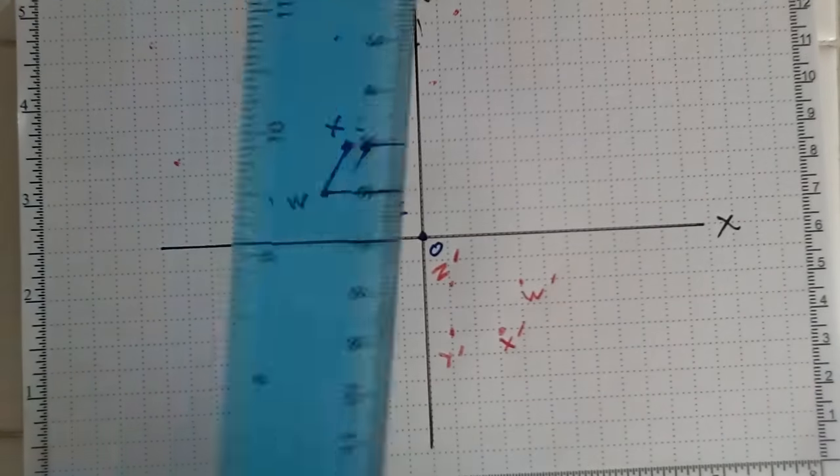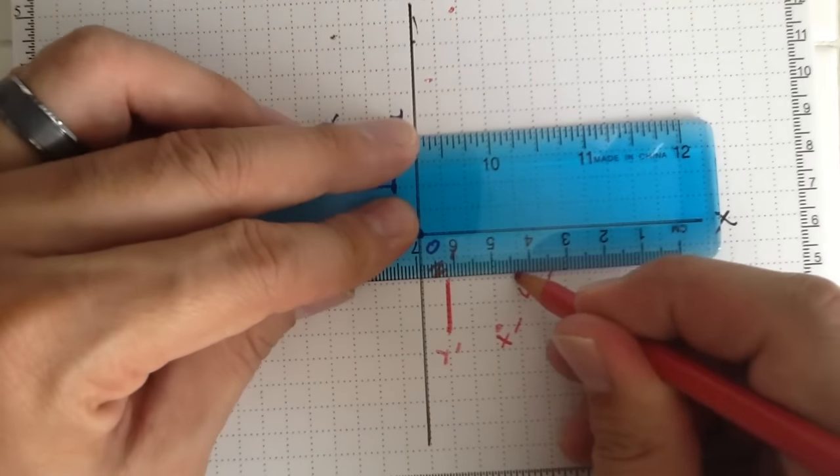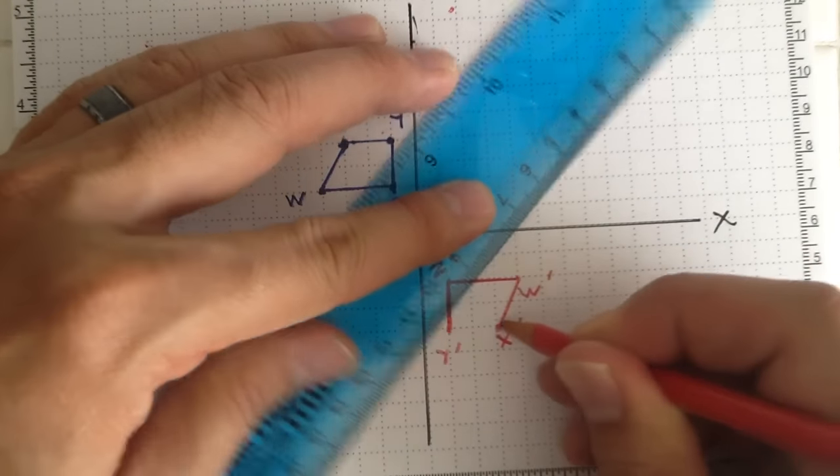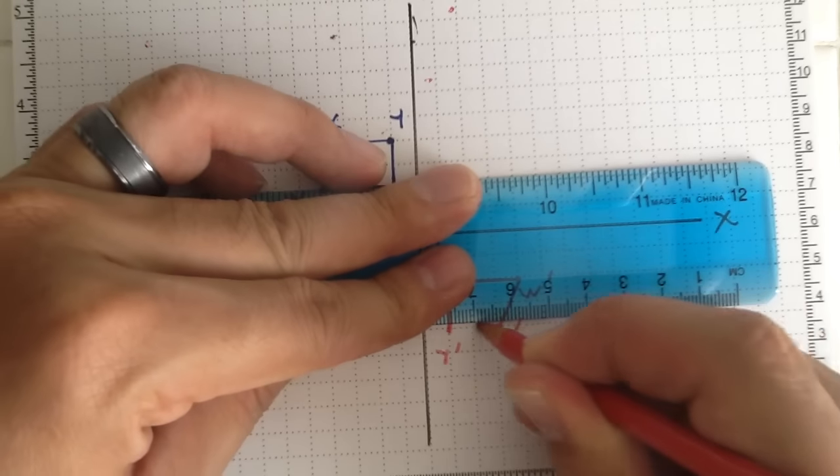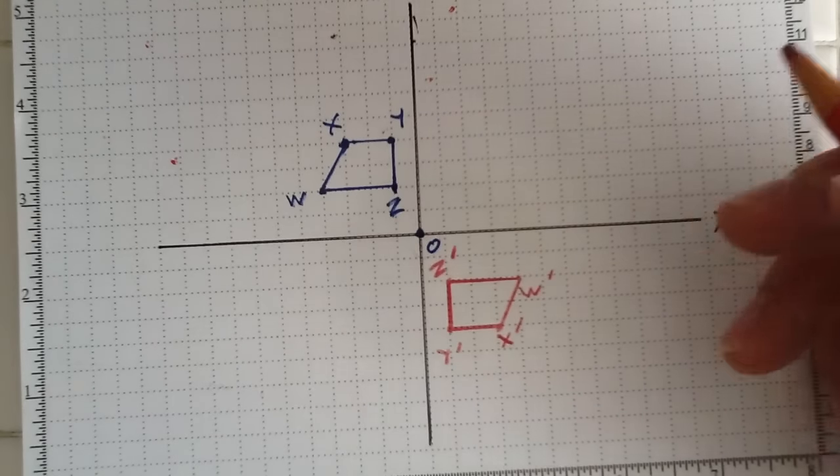All right. So once again, to finish, what I'm going to do is I'm going to join up the sides of my trapezoid. And if I've done it right, what I should see is still a congruent shape. That's one thing to check. And it should be rotated 180 degrees away from the original around the origin.